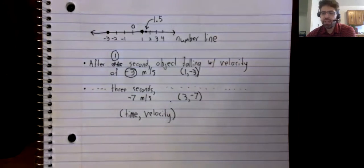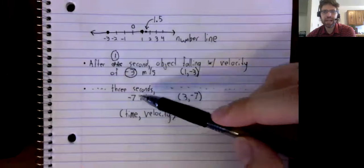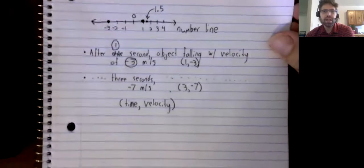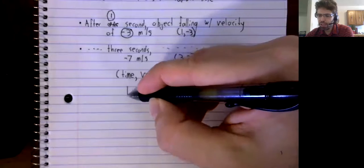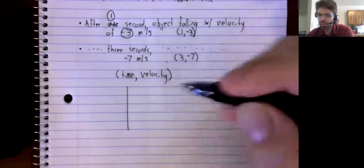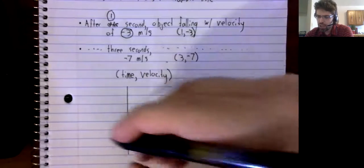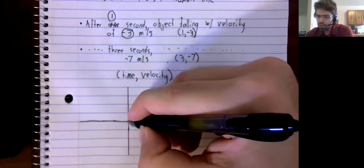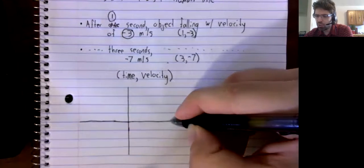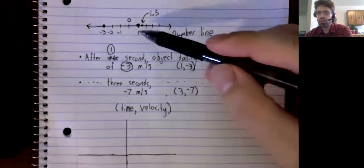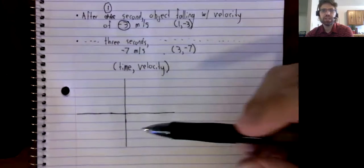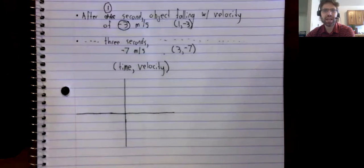What we need to store this data is a way of storing ordered pairs — two pairs of numbers. The way we do this is attributed to a French mathematician, René Descartes. He had the brainstorm that you could take two number lines and put them together at a right angle.